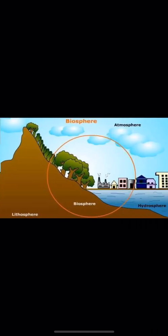Plants provide us with various products like silk, jute, etc. that we use in daily life. Natural vegetation and wildlife exist in a biosphere — a zone where the atmosphere, hydrosphere, and lithosphere are in close contact with each other. Together they form the biosphere, and natural vegetation and wildlife can only exist where air, water, and soil are all present together.